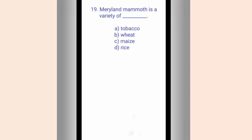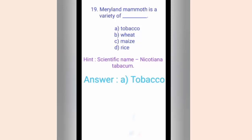Question nineteen. Maryland Mammoth is a variety of dash. The options are A. Tobacco, B. Wheat, C. Maize, D. Rice. The hint is Nicotiana tabacum, which is the botanical name for the answer. The correct answer is option A, Tobacco.